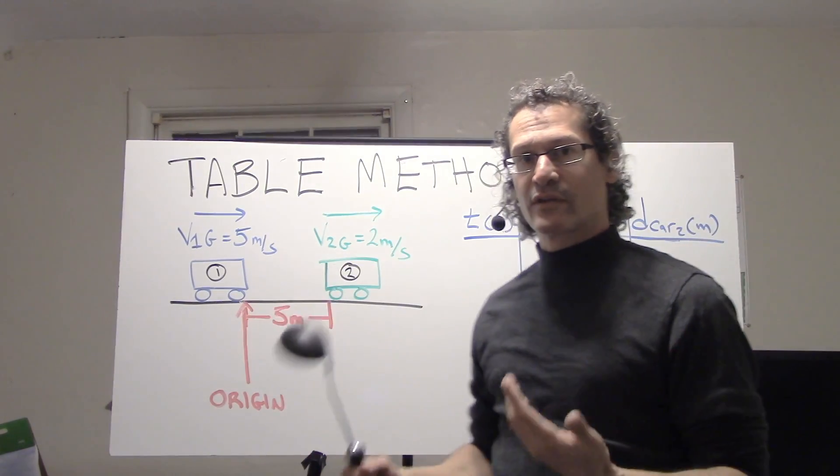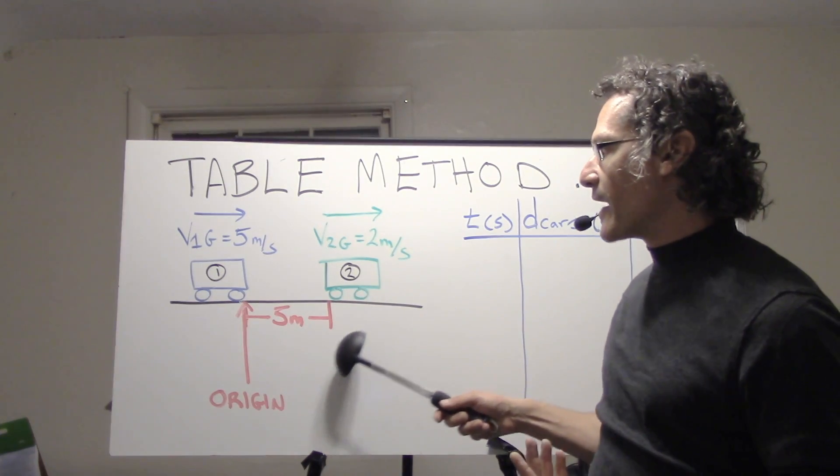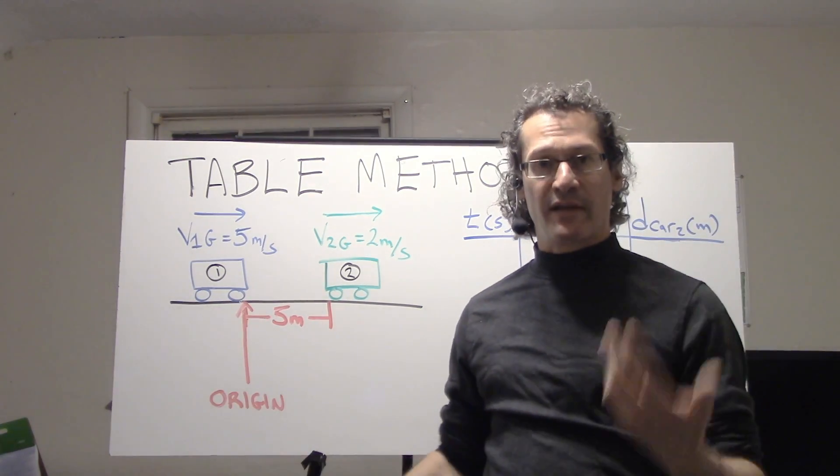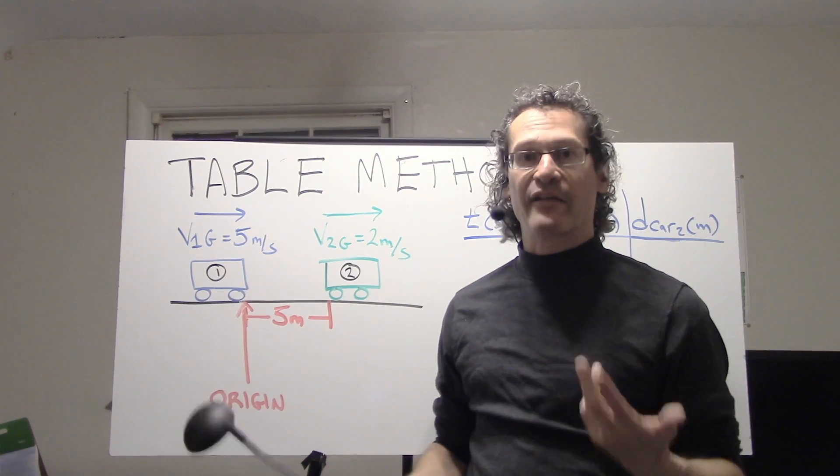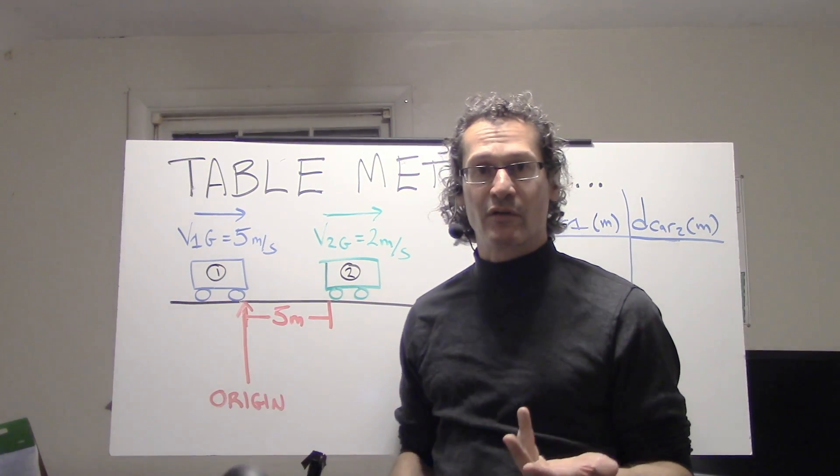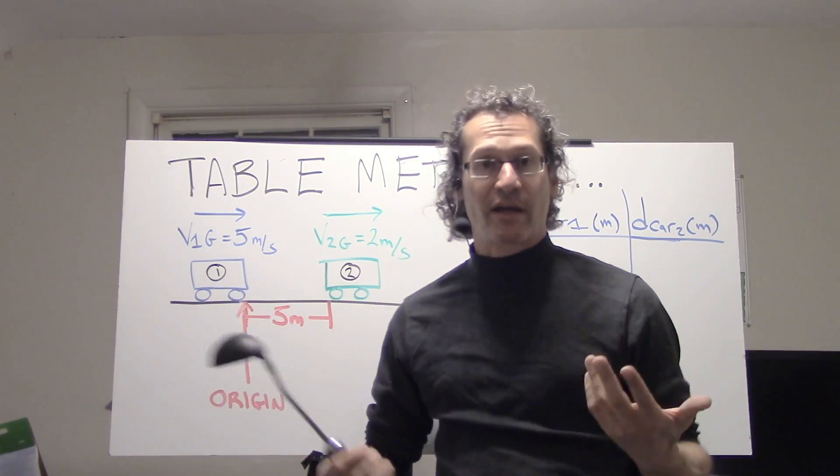So relative to car one, car two is at five meters in a positive direction. It has a displacement of five meters, and that's something we're going to use in each of the techniques as we go along.